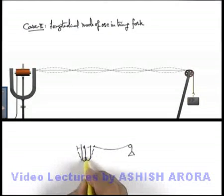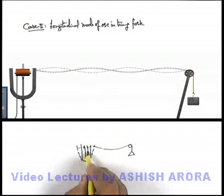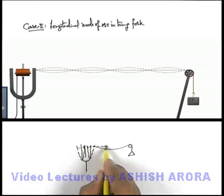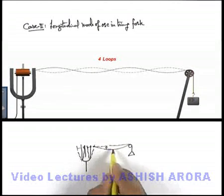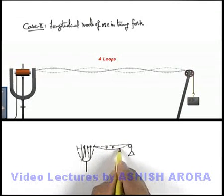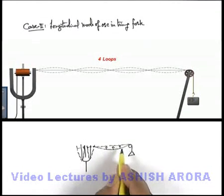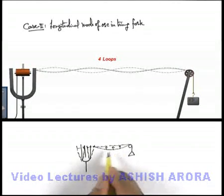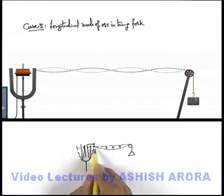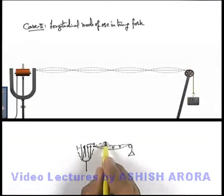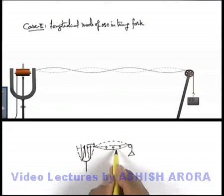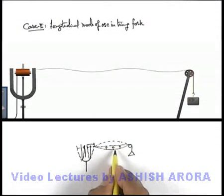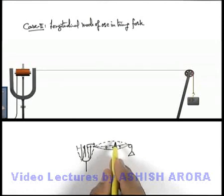When the arms are coming close, the string will become tight. The string particles will gain kinetic energy, and when the arms will move away again, the string will loosen and due to the kinetic energy it will move in the upward direction.